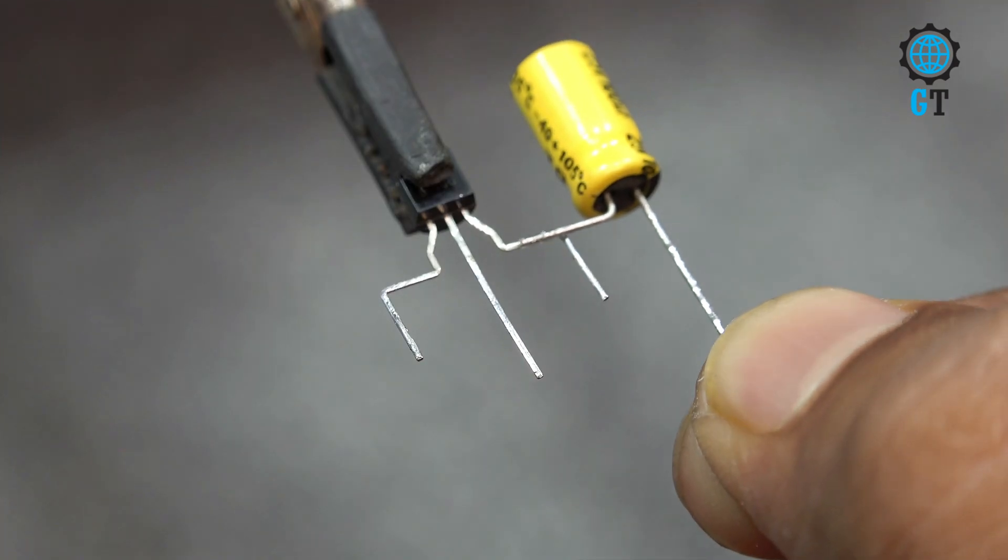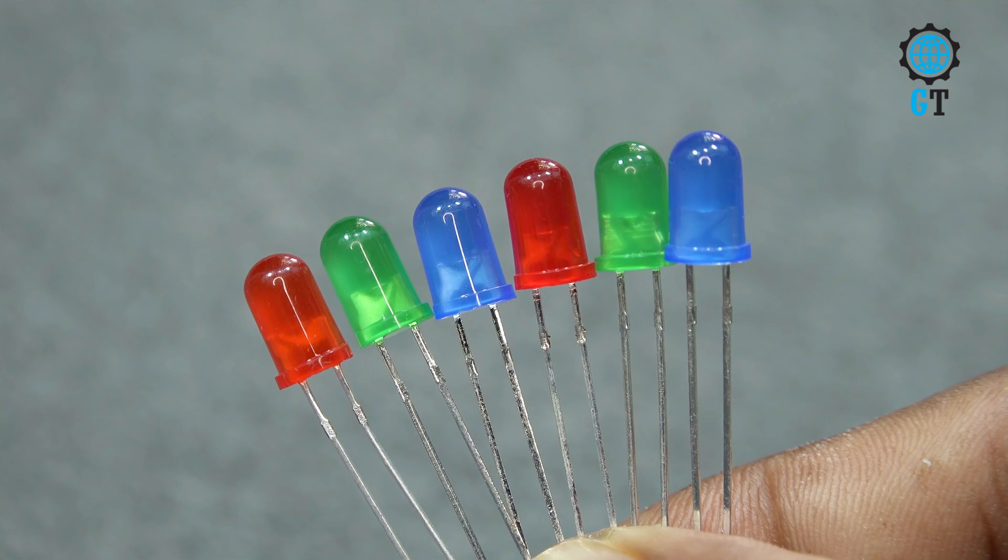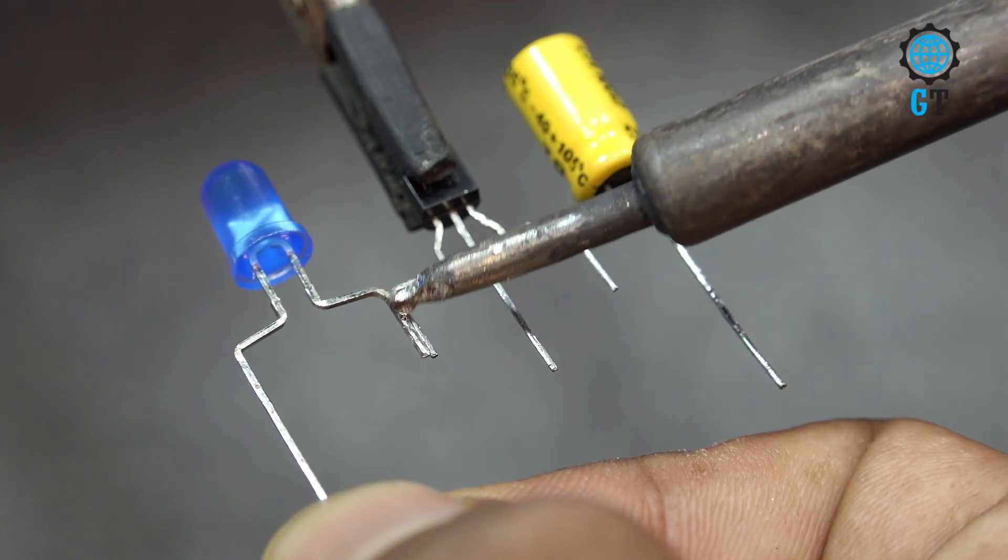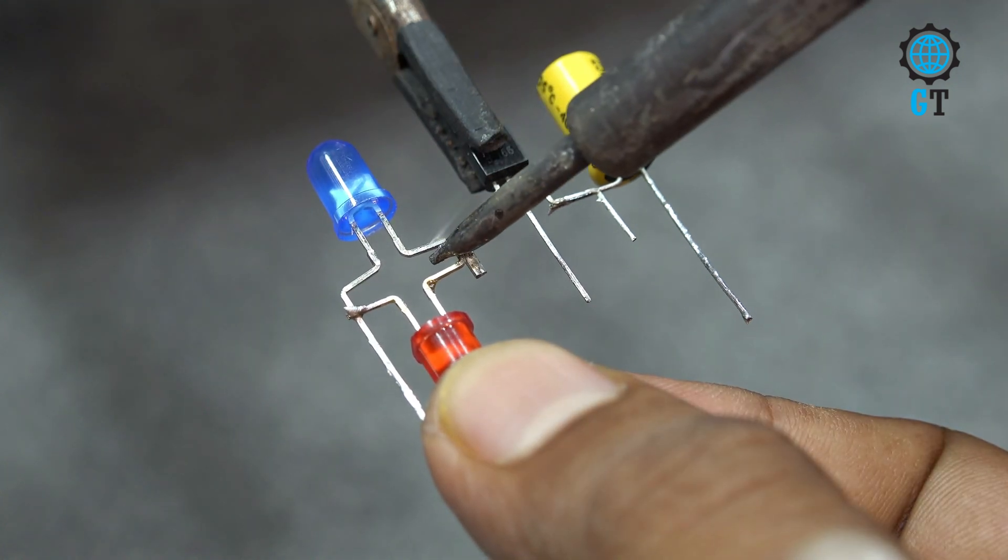First we connect the capacitor positive leg with the middle leg of the transistor. Then we need 6 LEDs. Now we connect the LED positive leg with the collector leg of transistor. We follow the same connection with another LED.